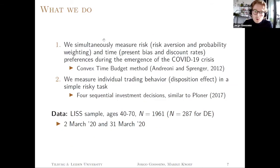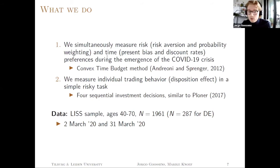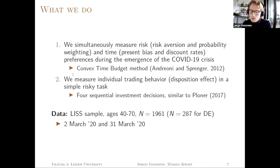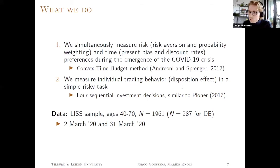What do we do? First, we simultaneously measure risk and time preferences — which is an improvement on the literature. We measure risk aversion, a classical input for optimal asset allocation; probability weighting, the S-shaped probability weighting from Kahneman and Tversky. These are the risk preferences. Then we measure time preferences: present bias, whether participants overvalue the present, and classical discount rates. The method we use is the convex time budget method from Andrioni and Spranger, American Economic Review 2012. Secondly, we measure individual trading behavior and specifically the disposition effect, using the paper of Ploner from 2017, with four simple risky investment tasks to check whether an individual is prone to the disposition effect.